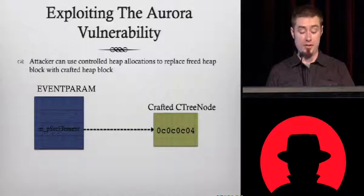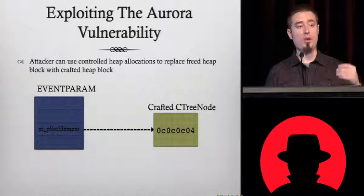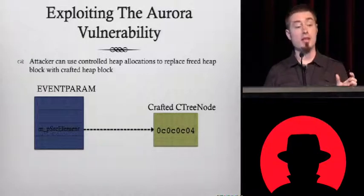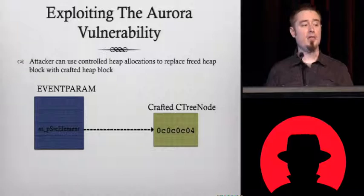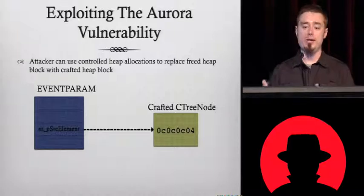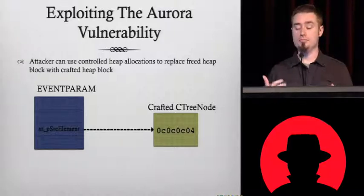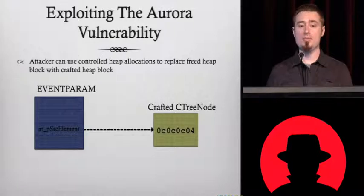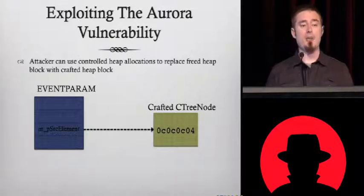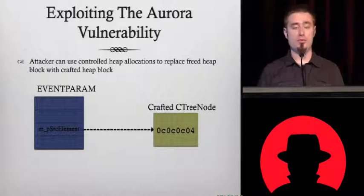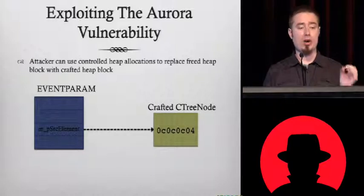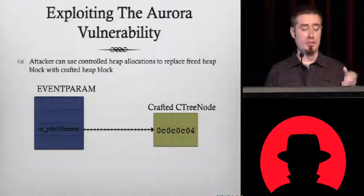The trick for this vulnerability was that we needed to control the C++ VTable, which is in the first four bytes. The first thing that comes to mind is: we'll just use a JavaScript string. The problem with that is in JavaScript strings, the first four bytes are the length.